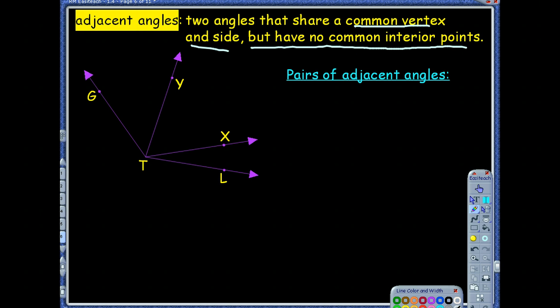But they cannot contain any common interior points. So if I was looking at this picture, you have to name two angles that have a common vertex and side, but you cannot have a common interior point.